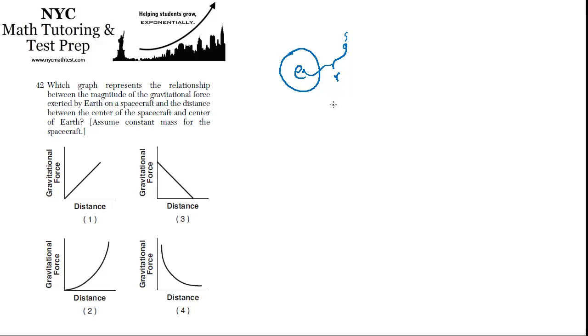How does that distance affect the strength of that gravitational force? So we want to know the relationship between the distance R and the gravitational force. Well, in general, when something is near Earth, we say the force of gravity equals mg, right?